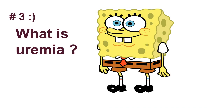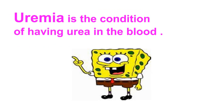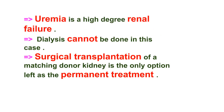Question number three: what is uremia? Uremia is the condition of having urea in the blood. Uremia is a high degree of renal failure, that is kidney failure. Dialysis cannot be done in this case; surgical transplantation of a matching donor kidney is the only option left as the permanent treatment.